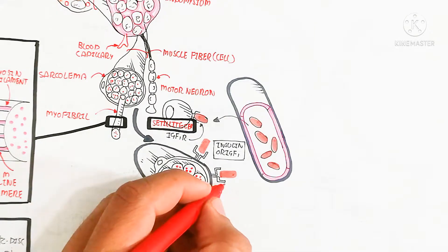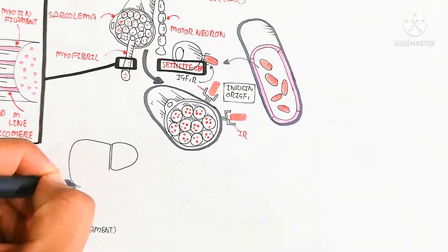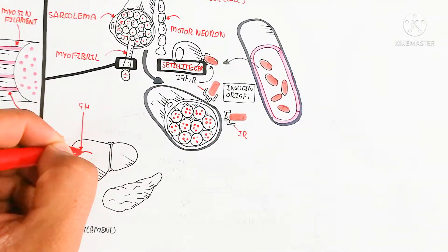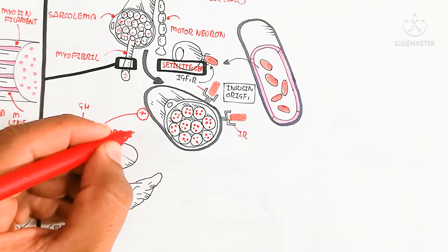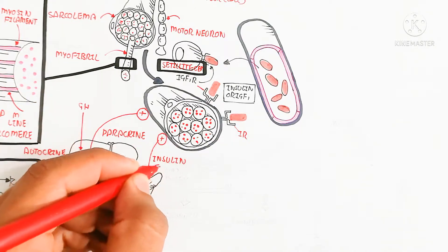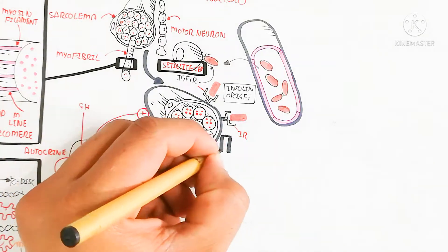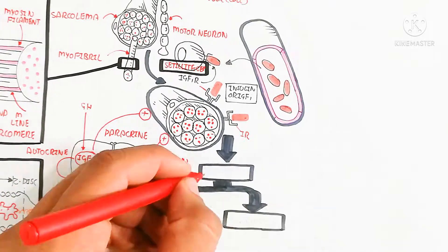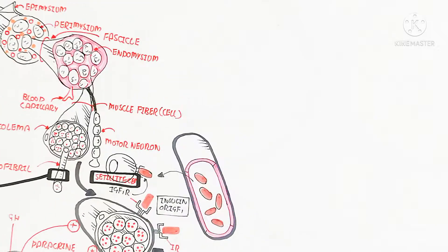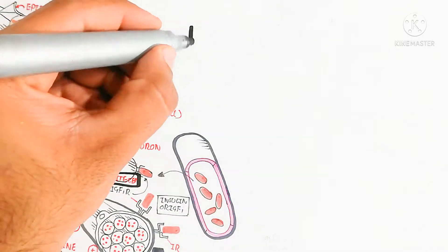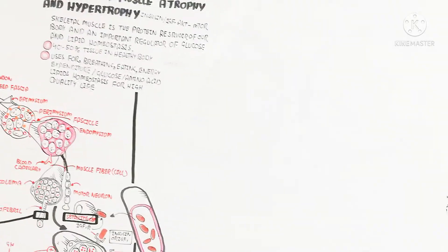The muscle fiber will be damaged, so insulin-like growth factor 1 will bind with the satellite cell as well. It will also repair after binding with the predominant muscle fiber, where insulin receptor and insulin-like growth factor binding leads to maturation and growth, increasing the thickness of the myofilament. Growth hormone triggers insulin-like growth factor in the liver as autocrine and also paracrine signaling. Paracrine targets another tissue while autocrine targets internally, leading to anabolism. Insulin from the beta cells of the pancreas is used for growth and regeneration.